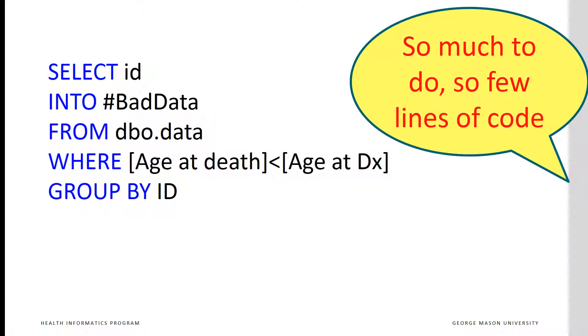To summarize, in this code the SELECT ID command tells the system that we are interested in finding the ID of the patients. The INTO command says that we should include these IDs into the temporary file called bad data. The FROM dbo.data command says that we want to get this information from a permanent table called data, which incidentally must include both age at death and age at diagnosis.